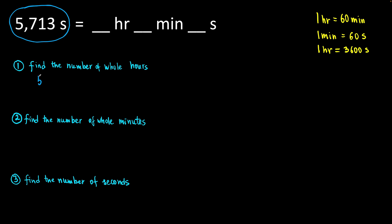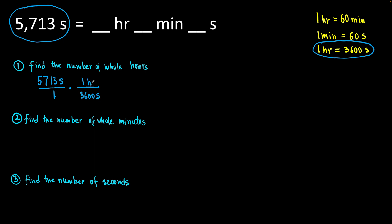We have 5713 seconds. We will write it over 1 and prepare to multiply. We are going to use these conversion factors: 1 hour is 60 minutes, 1 minute is 60 seconds, and 1 hour is 3600 seconds. So, I am going to use this conversion factor to go directly from hours to seconds. We are going to plug it in so our seconds cancel out — we have seconds on top in the numerator, so we will put 3600 seconds in the denominator and 1 hour in the numerator.